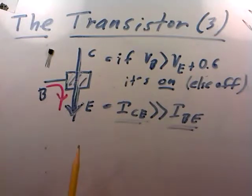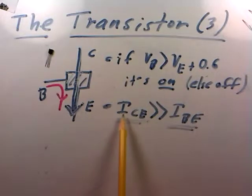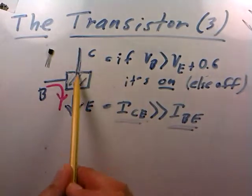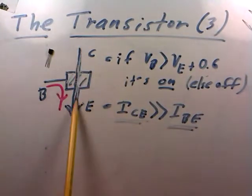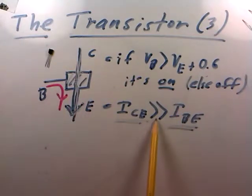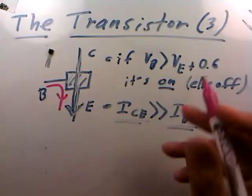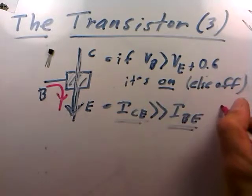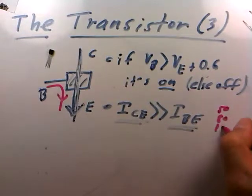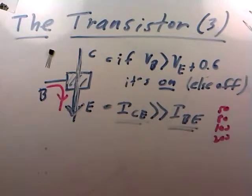When the transistor is on, the current that flows through the collector-emitter path — the big conducting path that's switched on and off — will be much much bigger than the base-emitter current. We're talking about factors of 50, 80, 100, or even 200. So the transistor definitely behaves like a current amplifier.